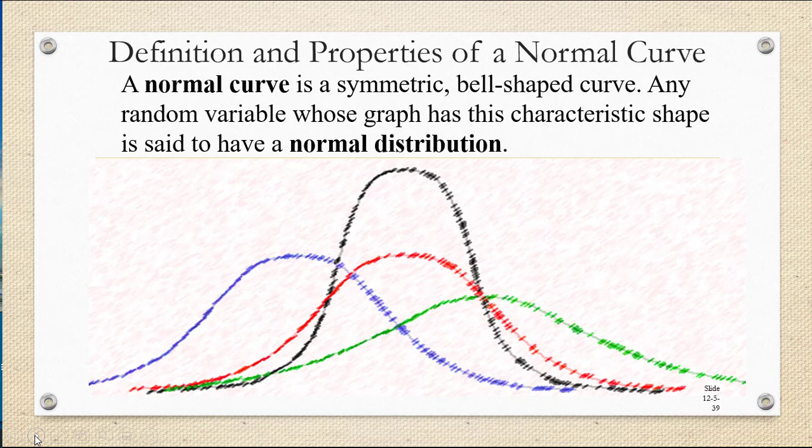A normal curve is basically a symmetric bell-shaped curve. Any random variable whose graph has this characteristic shape is said to have a normal distribution. It's called normal because it occurs in nature very frequently.